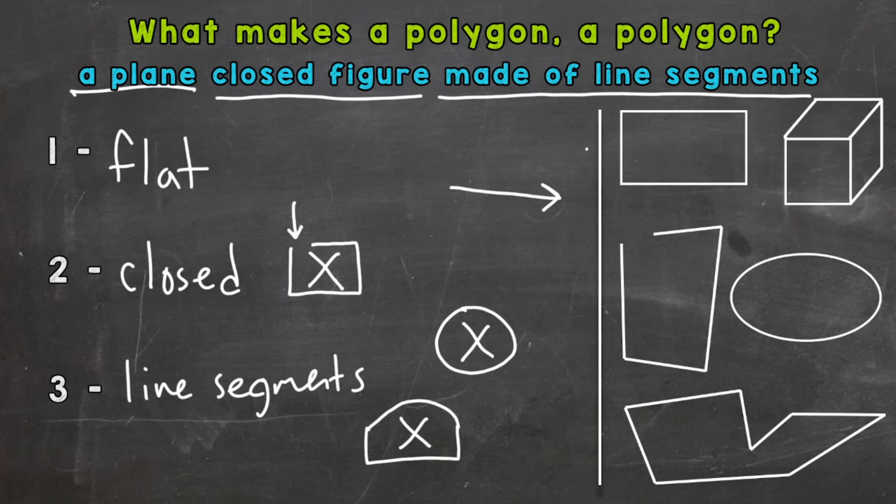The first one here, this rectangle: it's flat, it's closed, and it's made of line segments, so it is a polygon.